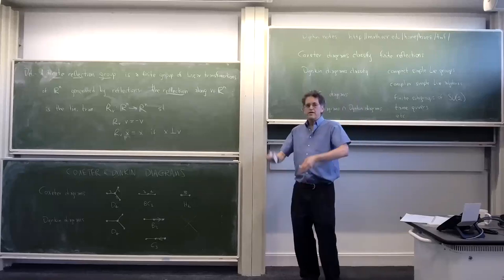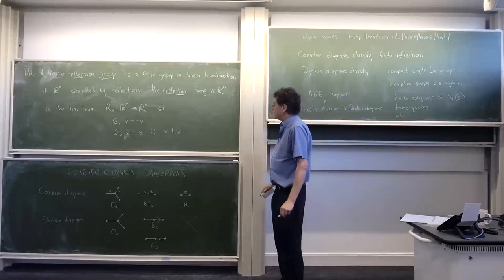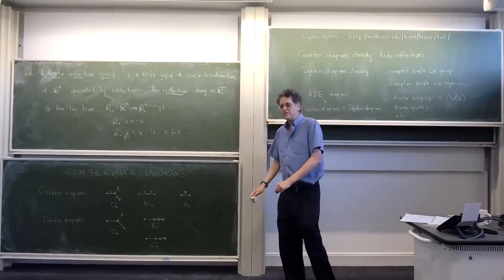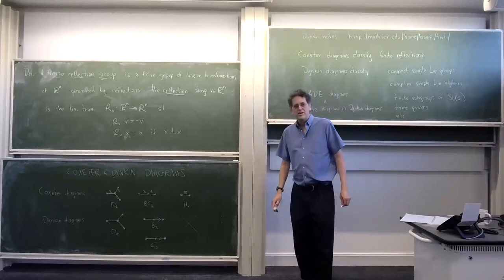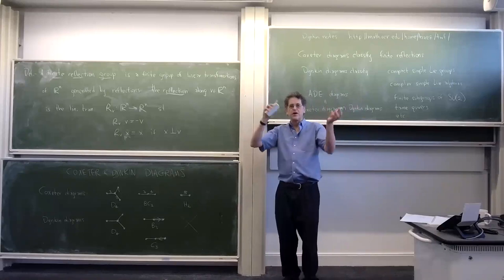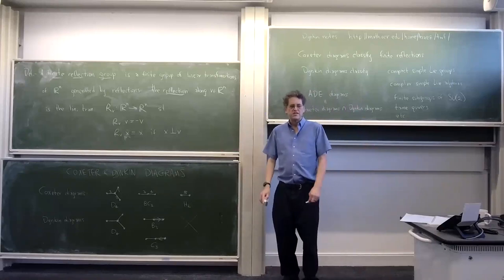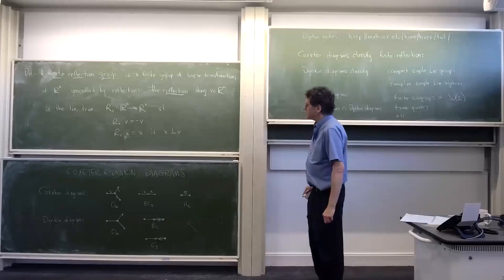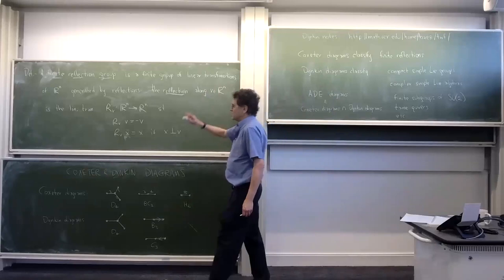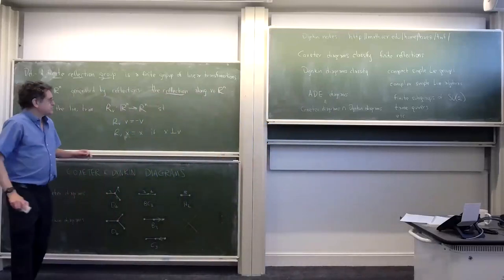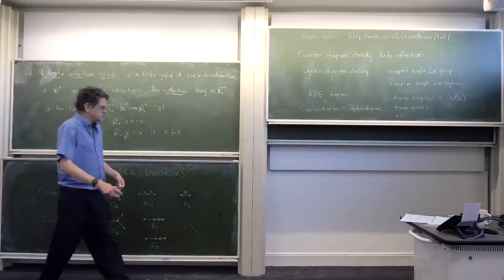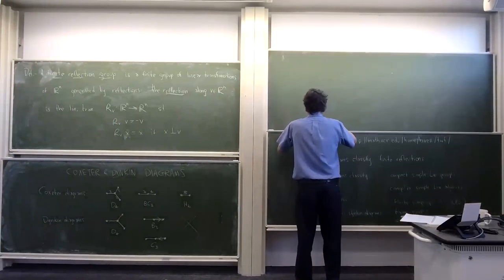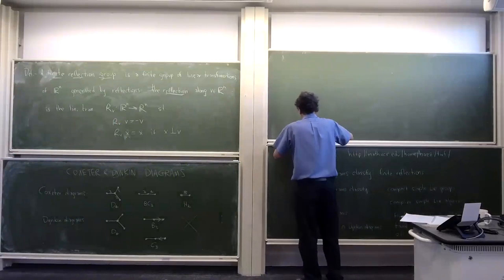It took people a while to realize how important these groups are. You might want to classify finite groups, but that's absolutely hopeless — there are reasons why. You might say, okay, let me classify finite groups of linear transformations of ℝⁿ, but that's still hopeless, because by Cayley's theorem every finite group can be thought of as some group of transformations of ℝⁿ. But if you add the qualification that the group should be generated by reflections, then you actually can classify all of them, and the classification is really beautiful and leads you in all sorts of great directions.